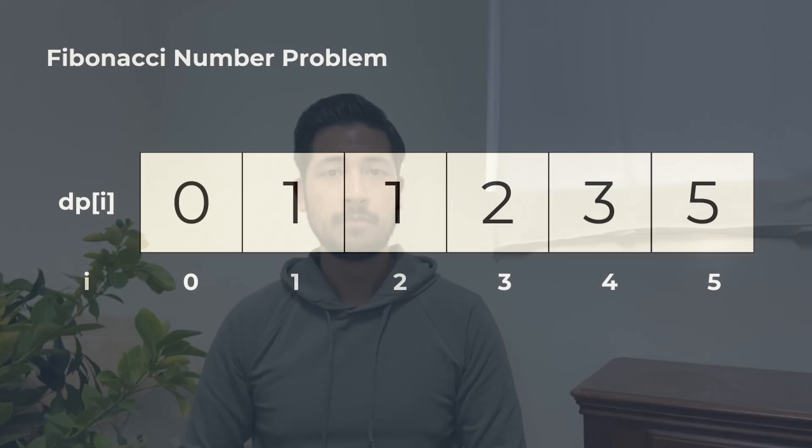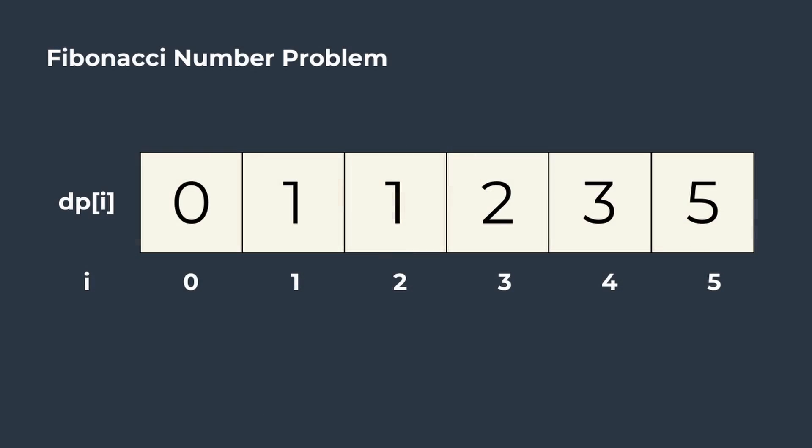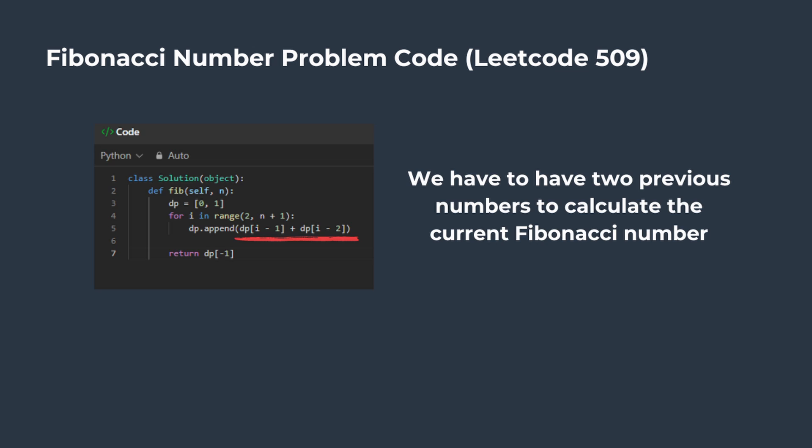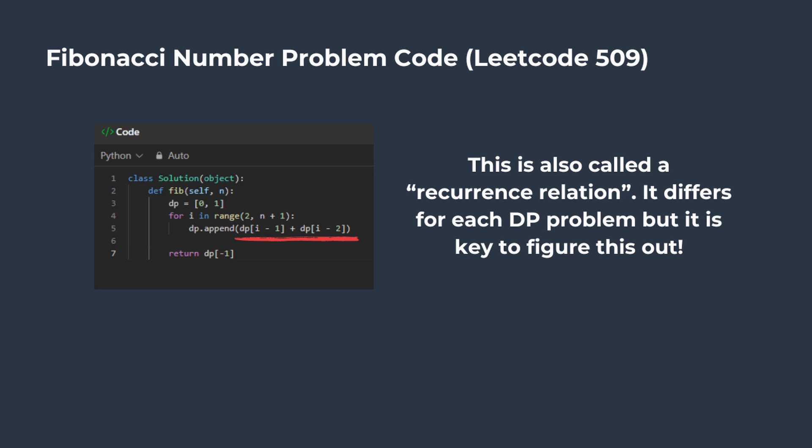In bottom-up dynamic programming, we fill a table, like an array or matrix, to store intermediate results. Consider the Fibonacci problem, where each entry at index i represents the Fibonacci number at that position. The order of filling is crucial, since we can't calculate dp[i] without dp[i-1] and dp[i-2]. The important thing to note is how this problem calculates the optimal solution using the line dp[i-1] plus dp[i-2]. This is known as the recurrence relation, and every dynamic programming problem will have one.